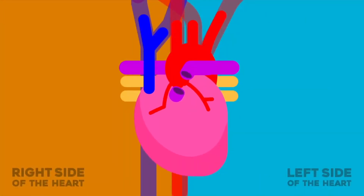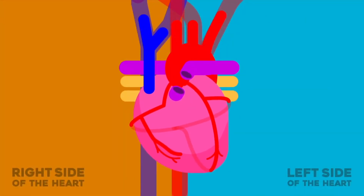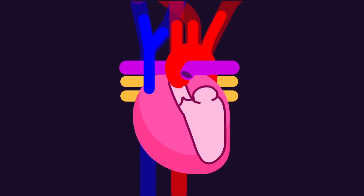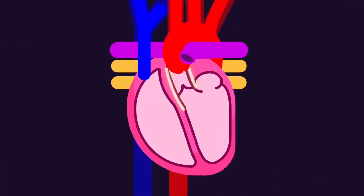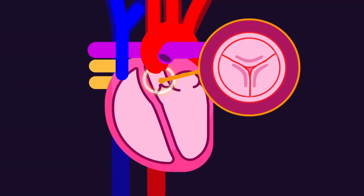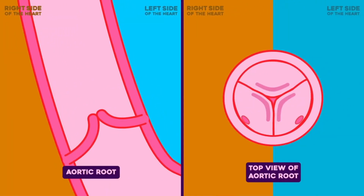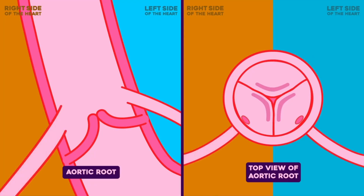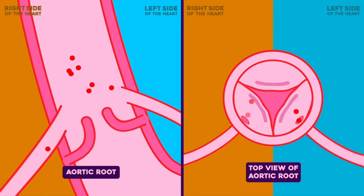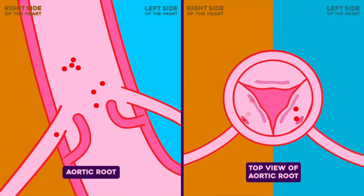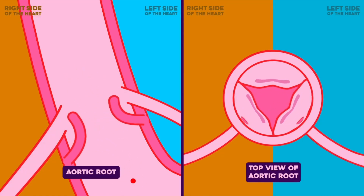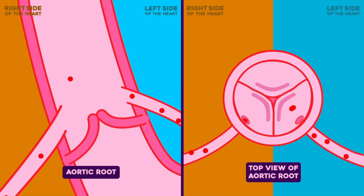Two coronary arteries originate from the left side of the heart at the beginning of the aorta, right after the aorta exits the left ventricle. Three aortic sinuses emerge from the wall of the aorta, just superior to the aortic semilunar valve. The left posterior aortic sinus gives rise to the left coronary artery, and the right anterior aortic sinus gives rise to the right coronary artery. The third sinus, the right posterior aortic sinus, typically does not give rise to a vessel.